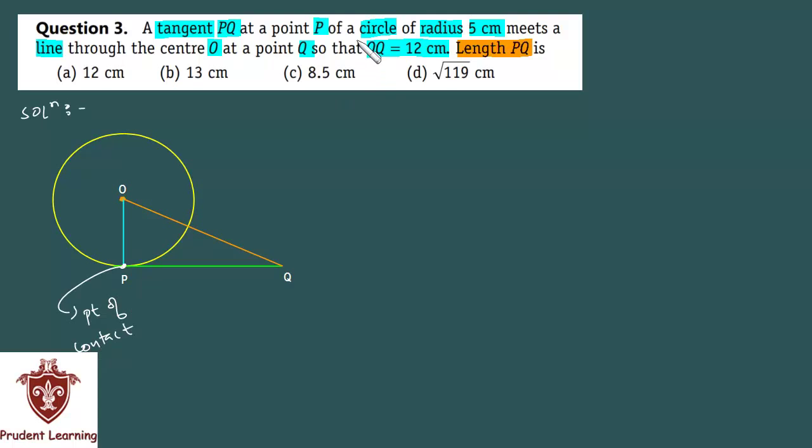The circle's radius is given as 5 cm, so OP (the radius) is 5 cm. Another piece of information given is that the tangent PQ's point Q touches a line coming from center O, and this line's length is given as 12 cm. From this information, you need to find the length of tangent PQ. This is unknown and you need to find it.